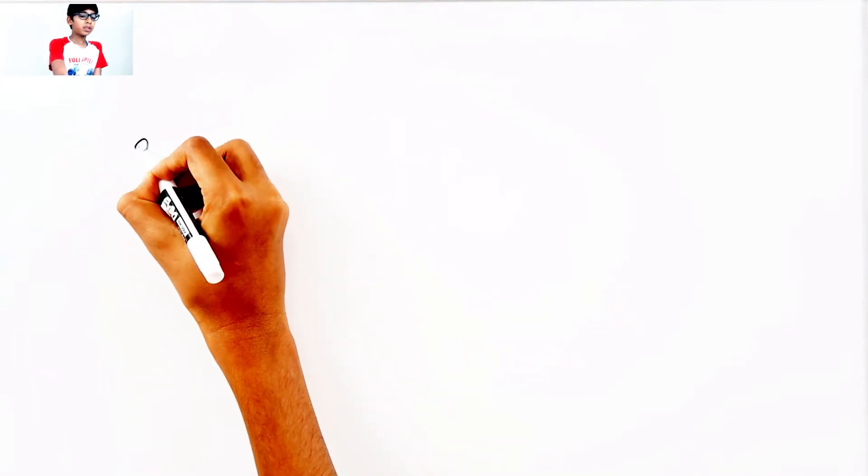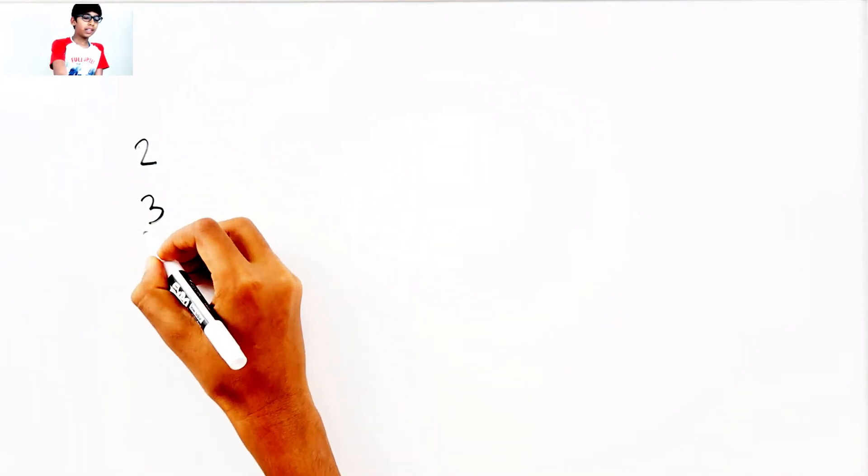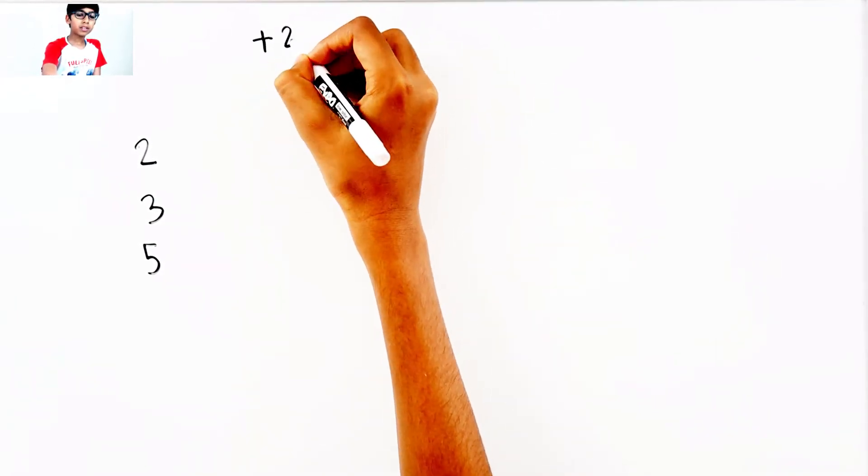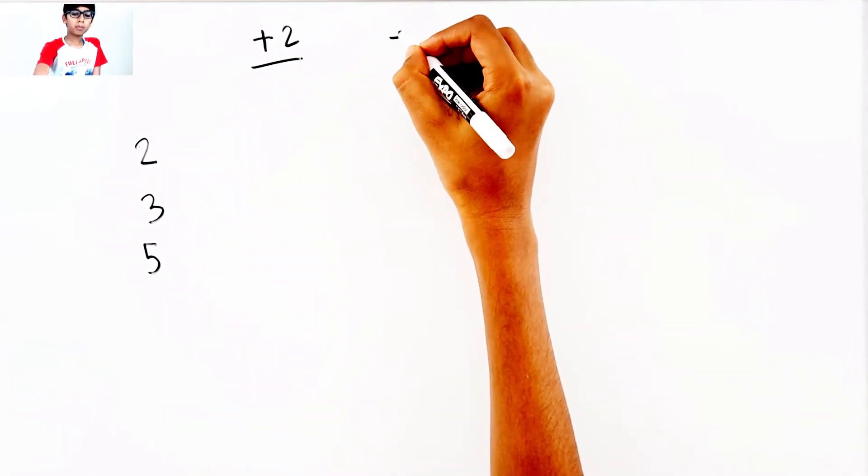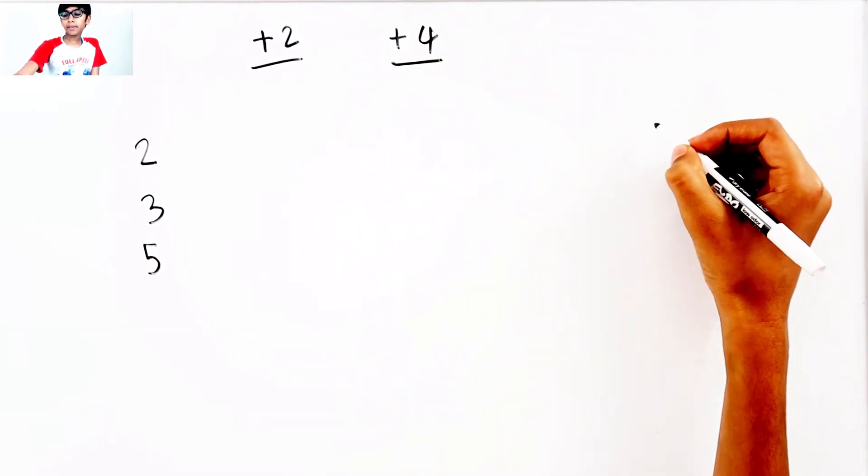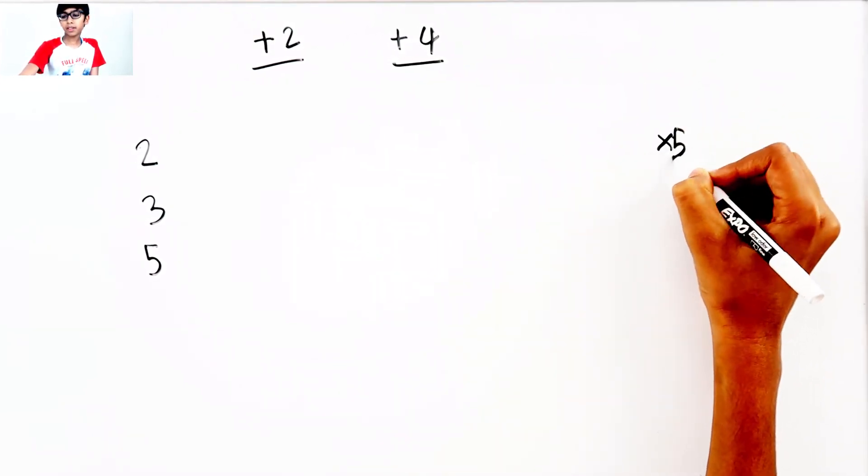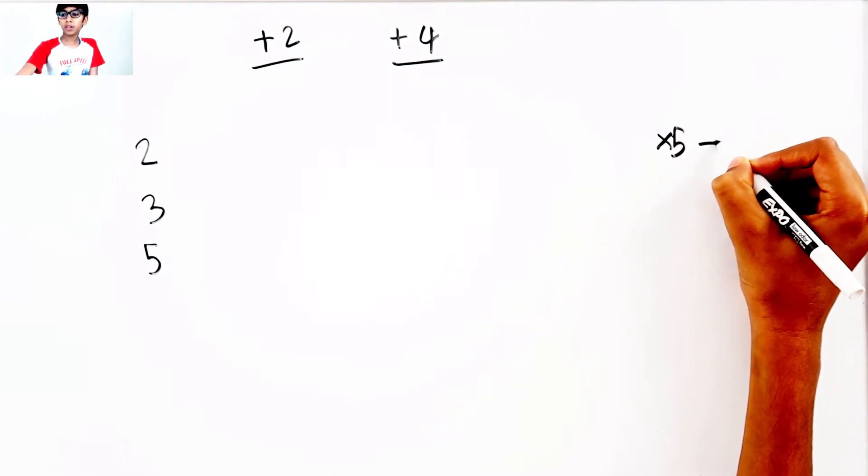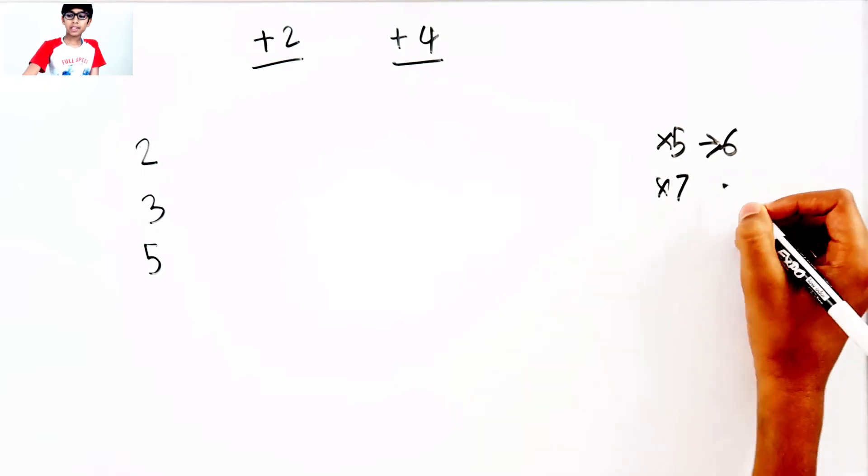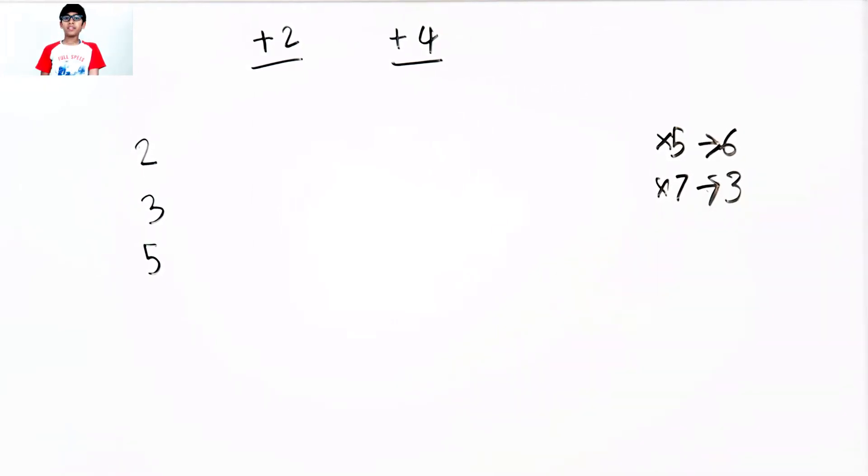All you need to remember is the numbers 2, 3, 5, and plus 2, plus 4, and times 5, 6, times 7, is 3. That's it! That's all you need to know!